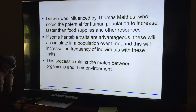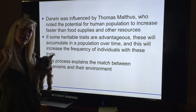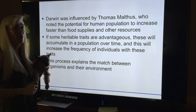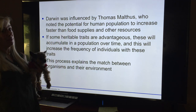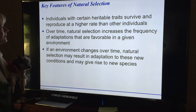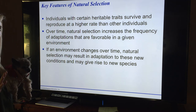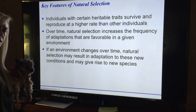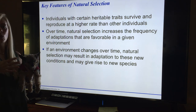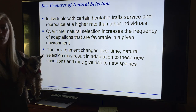If some heritable traits are advantageous, they will accumulate in a population over time, increasing the frequency of individuals with those traits. This process explains the match between organisms and their environment. That's why if the environment changes too rapidly, organisms cannot keep up — which is what's happening with climate change.